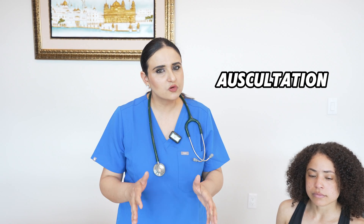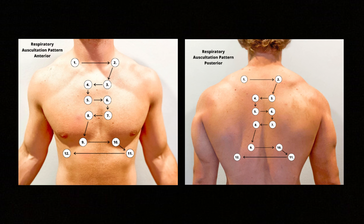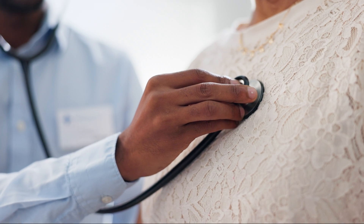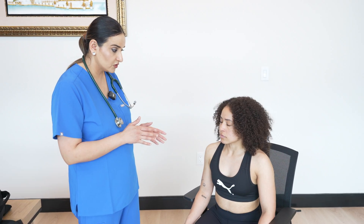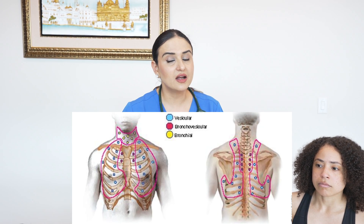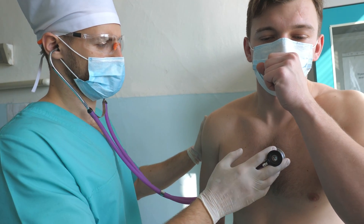Now we are going to proceed to the next step, auscultation — one of the most important steps in respiratory system assessment. I will assess both the anterior and posterior chest and even the lateral sides. Rachel, I'm going to place my stethoscope on your chest to listen to breath sounds. There are two types of lung sounds to know: normal sounds and abnormal sounds. Normal sounds include bronchial sounds heard over the trachea, bronchovesicular sounds heard over the main bronchi, and vesicular sounds heard over the entire chest. Abnormal sounds include wheezing, crackles, and ronchi.